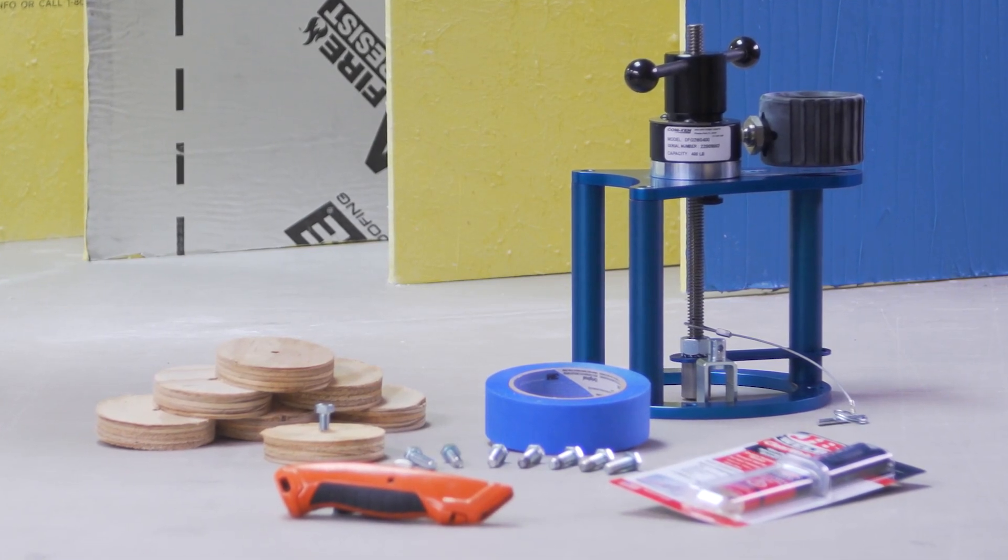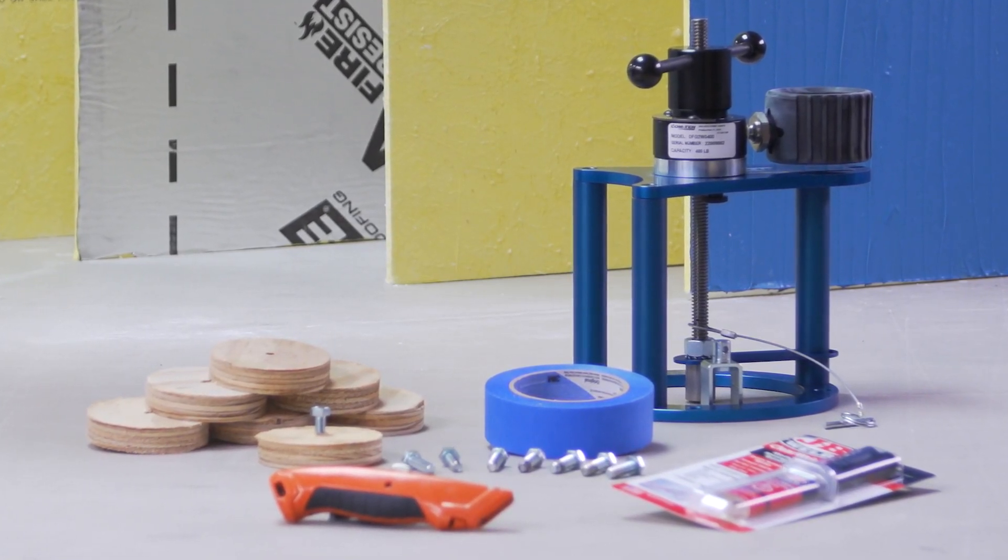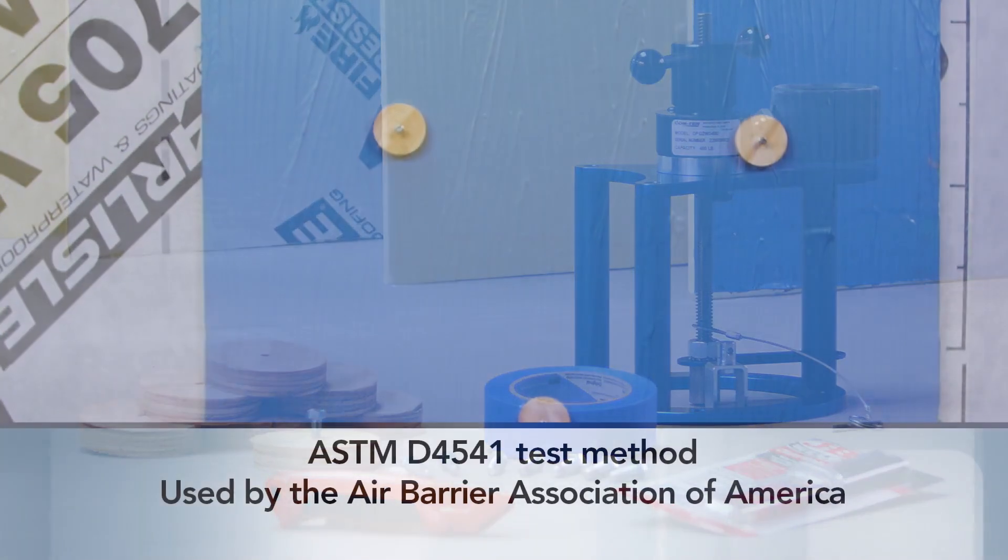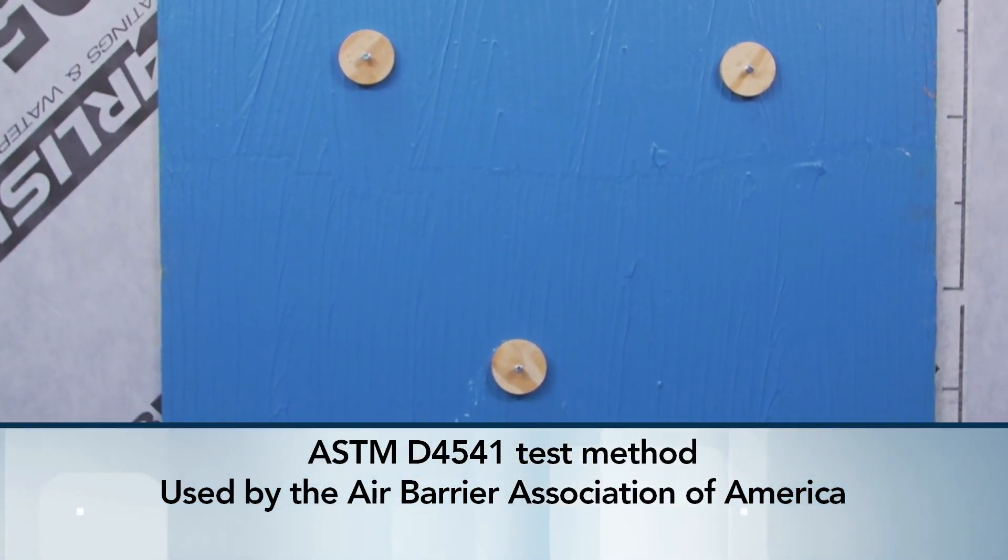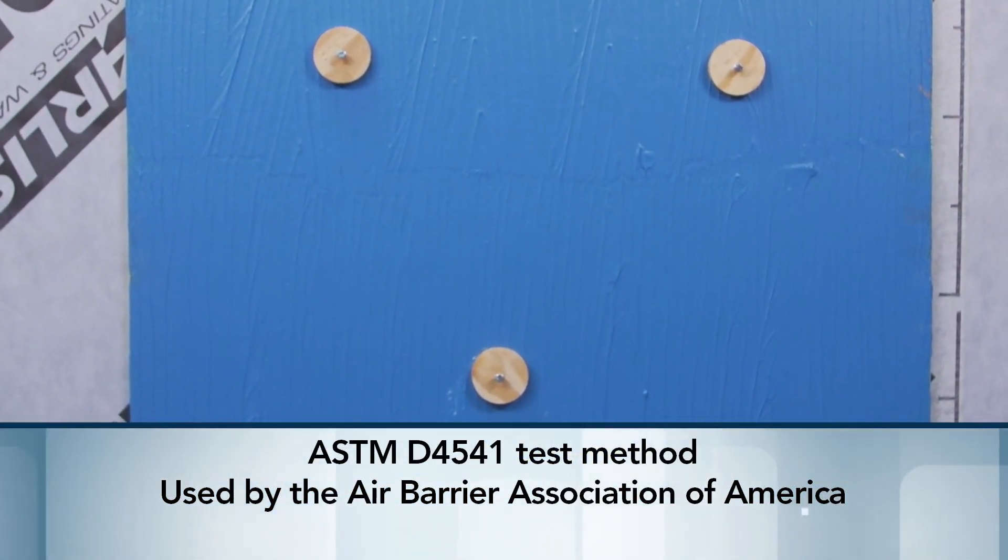This video will show the correct technique for performing pull adhesion testing on CCW wall membranes using the ASTM D4541 test method used by the Air Barrier Association of America.